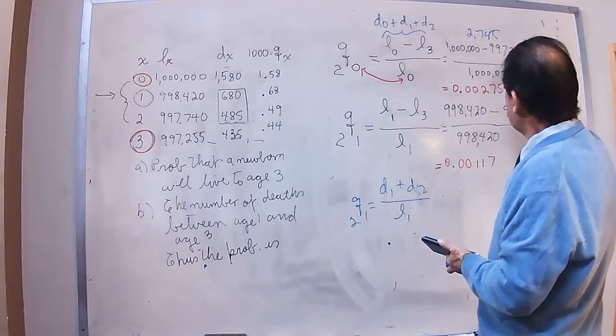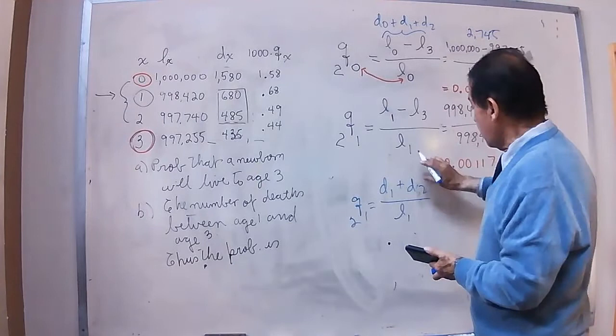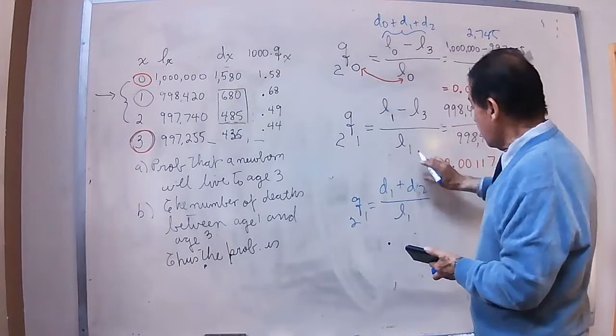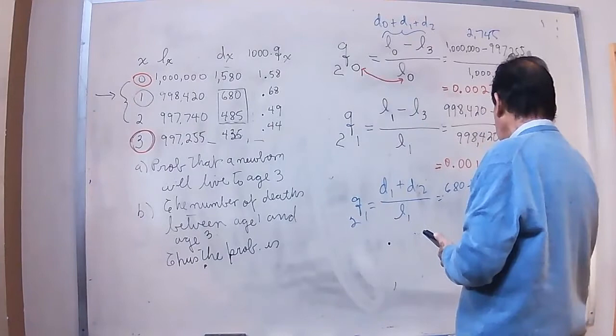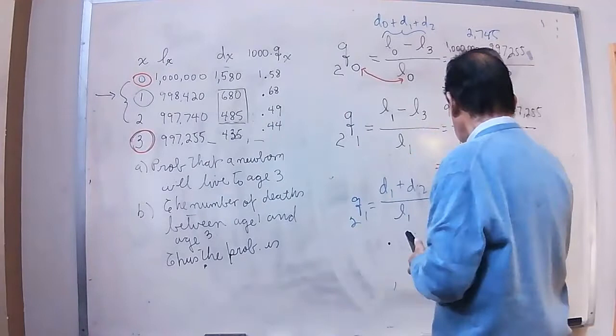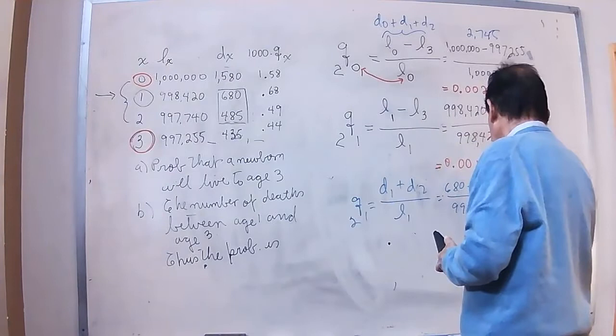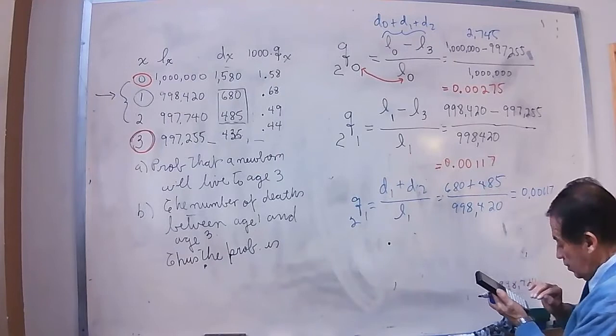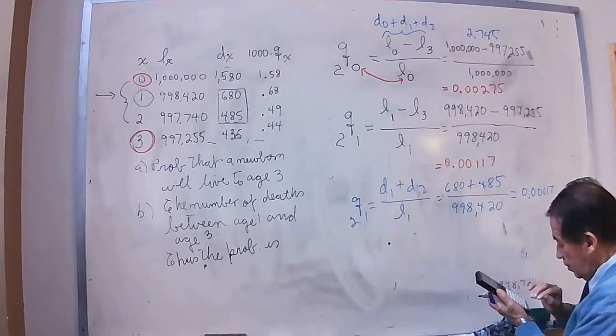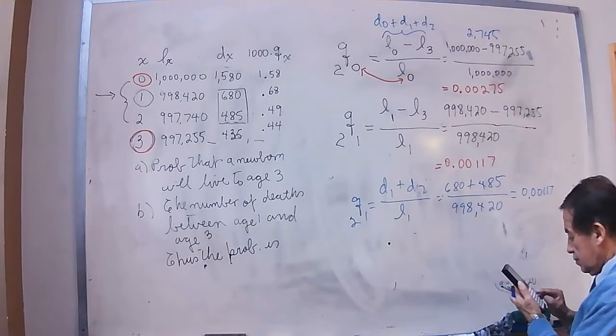Now, if you want to see the probability of people which is living at age one, you will have to consider only 680 plus 485 divided by the number of persons which are one age, and this will give us a result of 0.00117. But we can make a proof in the calculator also. Yes, exactly. This is the same answer. I have proved with my calculator.